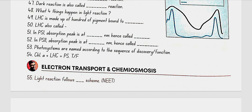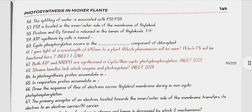Chlorophyll A plus LHC equals a photosystem. Light reaction follows the Z scheme. Splitting of water is associated with PS2, which is located on the inner side of the thylakoid membrane. Four protons and O2 are formed and released into the lumen of the thylakoid.